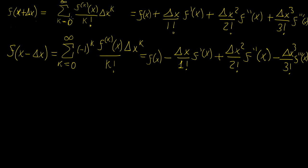The first formula is for when we add the delta x step, giving a continuous positive series that increases in powers of delta x and extends to infinity. The second formula uses negative delta x in the argument of the function, which produces an alternating series — the first term is positive, the second negative, the third positive, and so on, alternating sign.